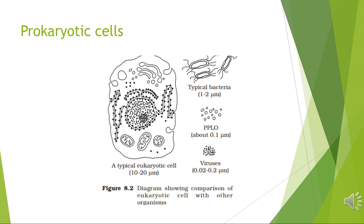The fluid matrix filling the cell is the cytoplasm. There is no well-defined nucleus; instead, a nucleoid is present. The genetic material is naked and not enveloped by a nuclear membrane. In addition to the genomic DNA — a single circular chromosome — bacteria also have small circular DNA molecules inside called plasmids.